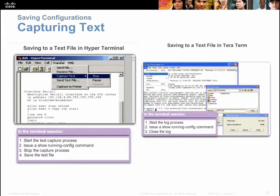We can also capture our text and save it in a Notepad document — another way to back up what you've done. You may want to carry a copy of your config on a thumb drive or have it stored on a computer so it's not only on the router or switch. From the terminal emulation program where you've typed your config, you can capture that text to a text file.